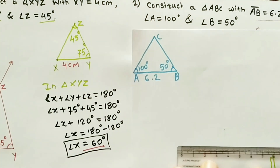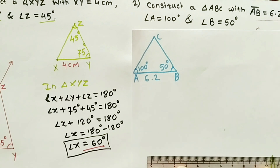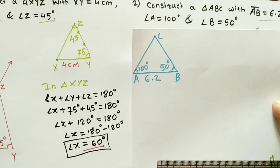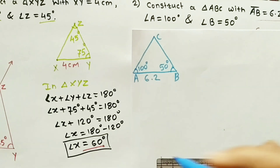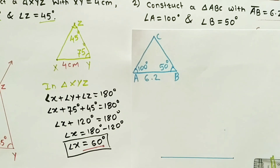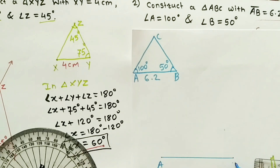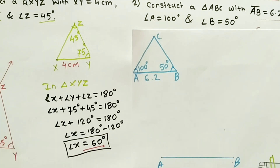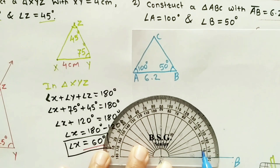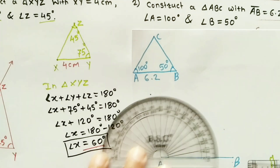Mark 6.2 cm and draw the line segment. Then take your protractor and with its help draw the angles — angle A is 100 degrees and angle B is 50 degrees. Draw angle A of 100 degrees and mark it.